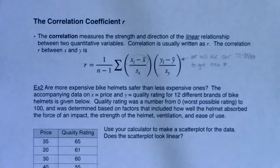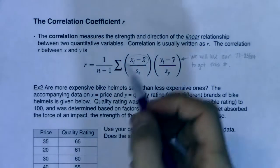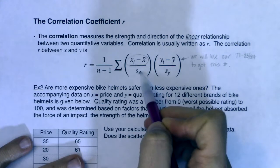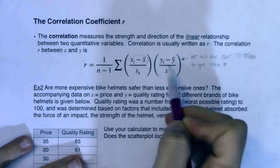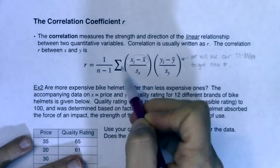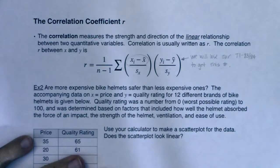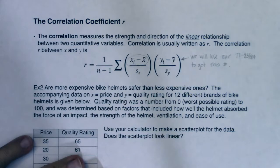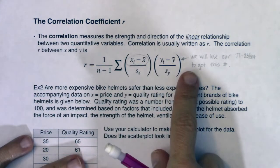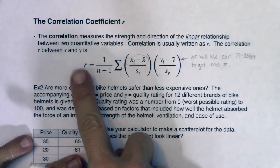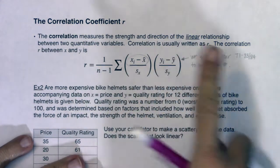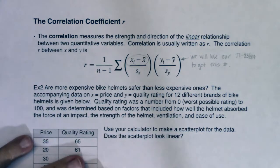We'll use technology to get that number. It's taking a bunch of deviations, putting them in ratio to the standard deviation, multiplying a bunch of these for the ordered pairs, adding them all up and getting an average. We divide by n minus one in the same way we did for standard deviation back in chapter two — it has to do with linear independence and degrees of freedom. We're not going to worry about this formula; we're going to get our number from our calculator.